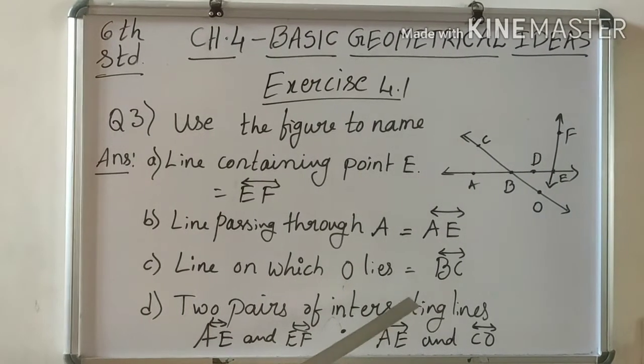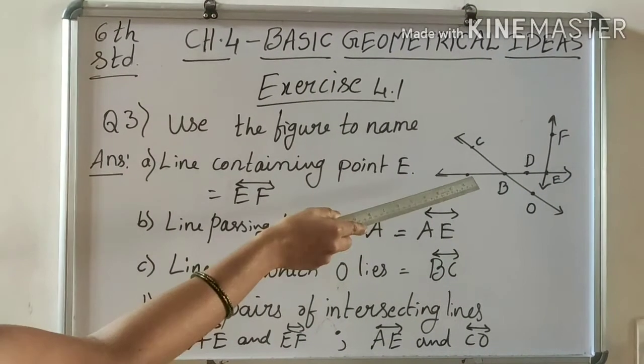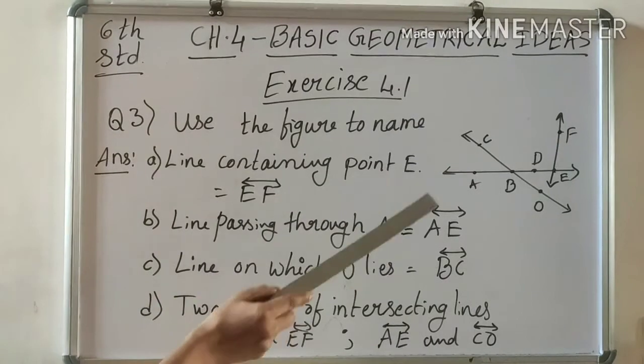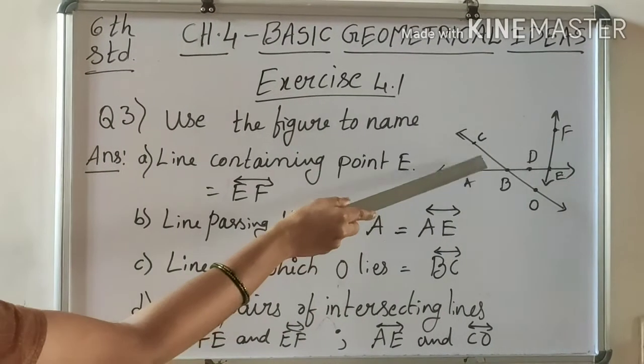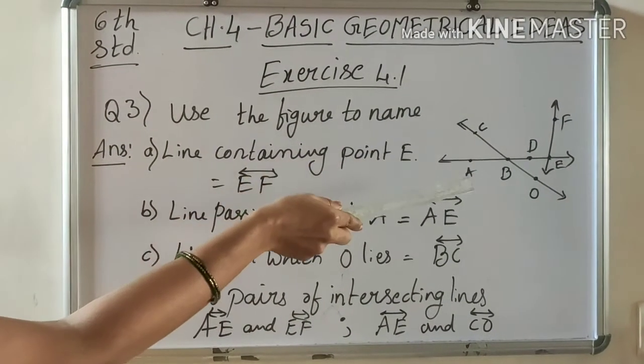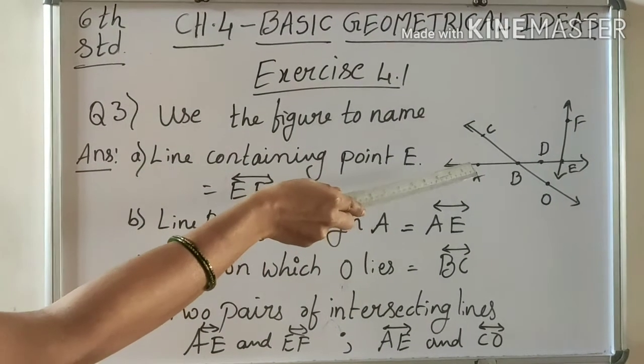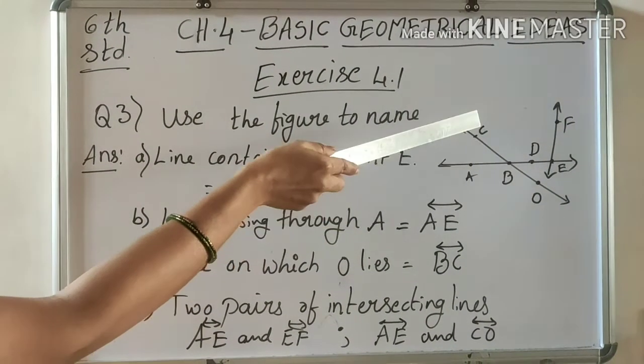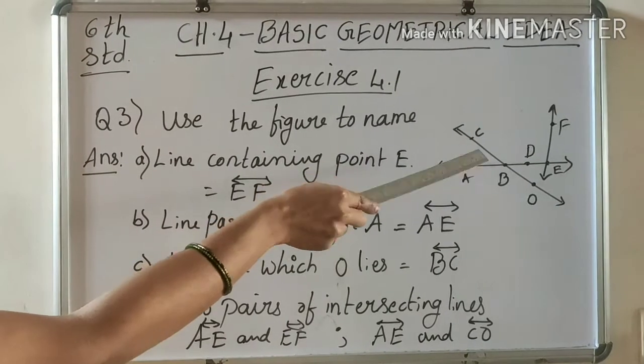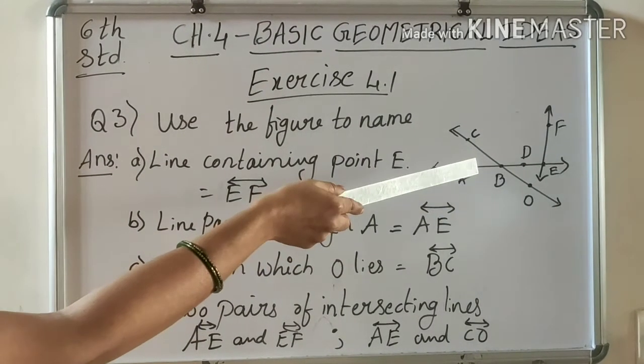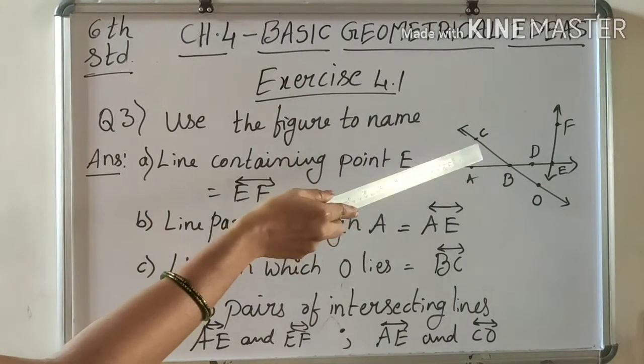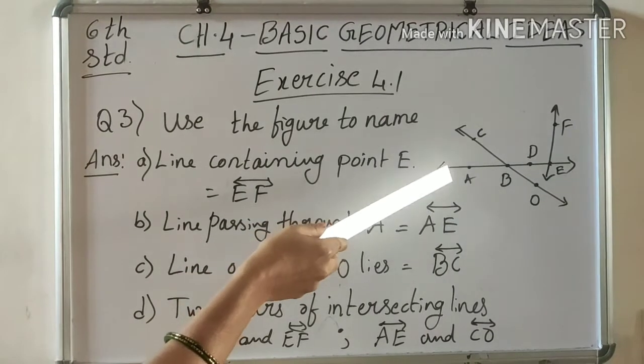Next, two pairs of intersecting lines: which two lines are intersecting? Here is one. Line OC and OE intersect at B. And EF and AE intersect at E. These are the two pairs of lines intersecting.